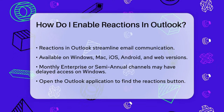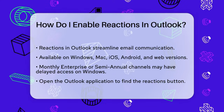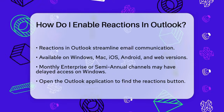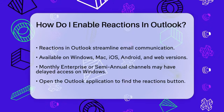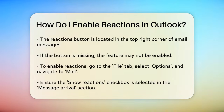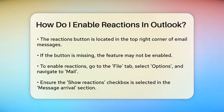To start, open your Outlook application. If you're using the desktop version, look for the Reactions button in the top right corner of the email message, alongside the Reply and Forward buttons. If you don't see this button, it's likely because the feature is not enabled.